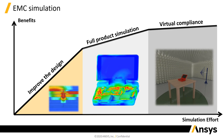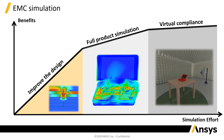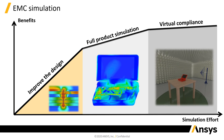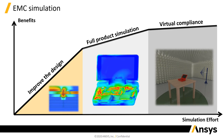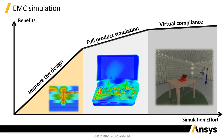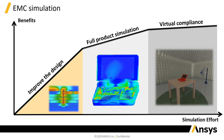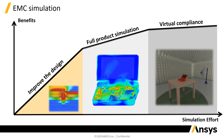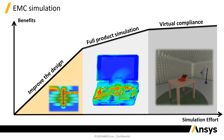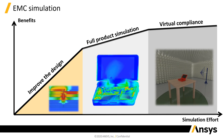You can also simulate your full product. In this example we're still talking about the same handheld computer. If you simulate a full product, you can see more output from the electromagnetic simulation — interference between antennas and digital signals, and crosstalk. You can see radiated emissions from your product, which is another important output you can get from a full-product simulation.